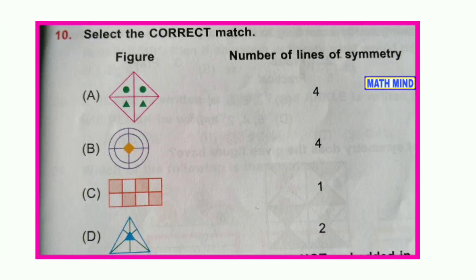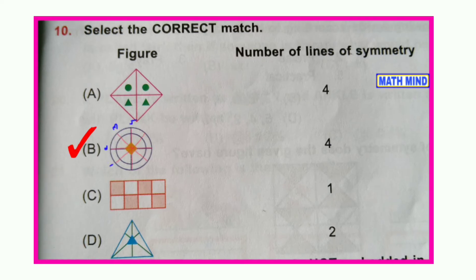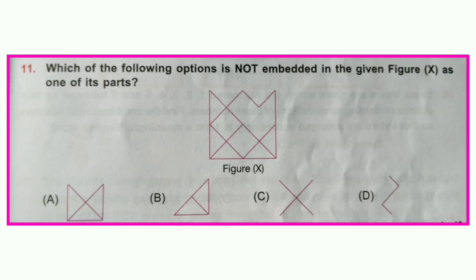Question number ten: Select the correct match between column one (figure) and column two (number of lines of symmetry). Option A is wrong — there will be only one line of symmetry. Option C is wrong — there will be no line of symmetry. Option D is wrong — there is only one line of symmetry. Option B is correct — it has four lines of symmetry.